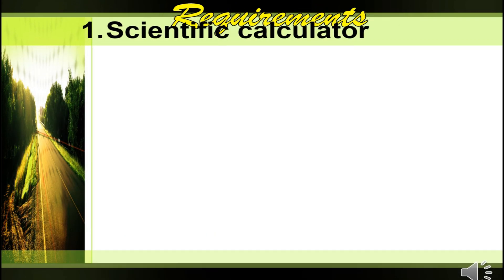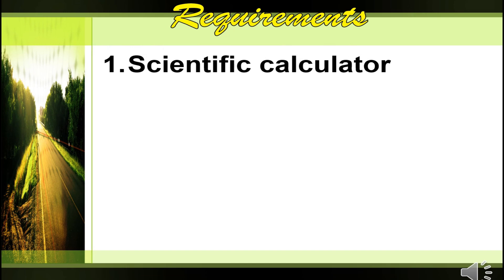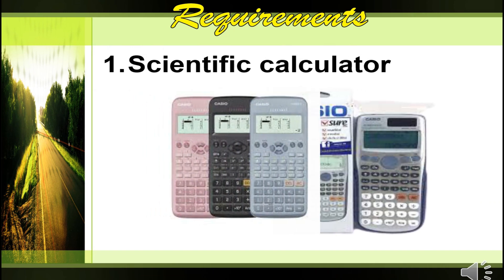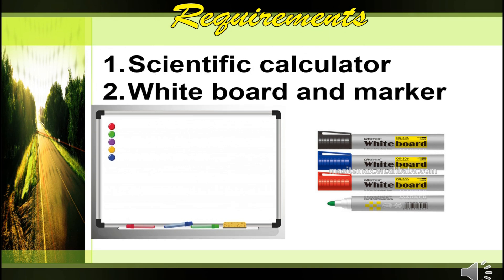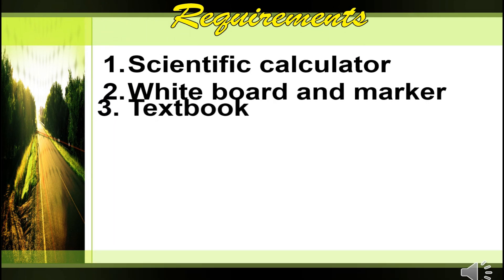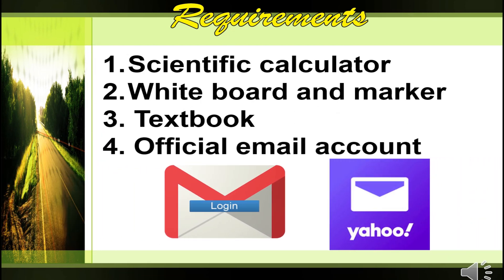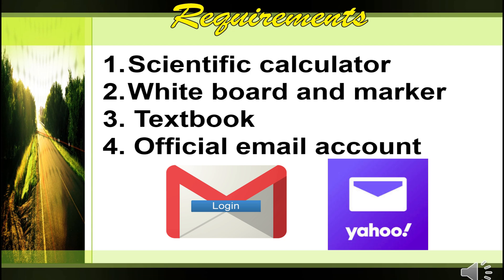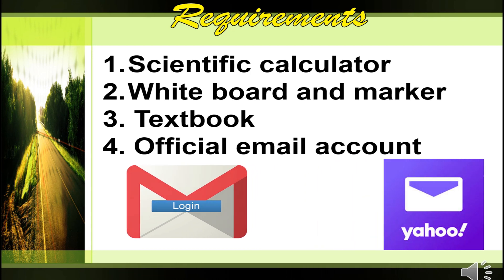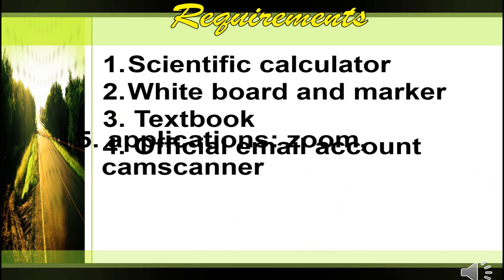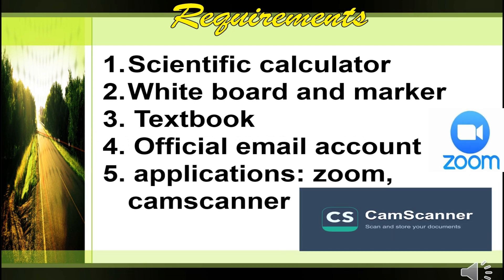For this subject, you are required to have the following: a scientific calculator for computation purposes, a whiteboard and marker for solving during our Zoom meetings, and a textbook or e-book available in your Genu account, which will be uploaded by your instructor. Next, you will need your official email account, which you will use from the beginning to the end of this school year. Also, please download applications like Zoom and CamScanner.